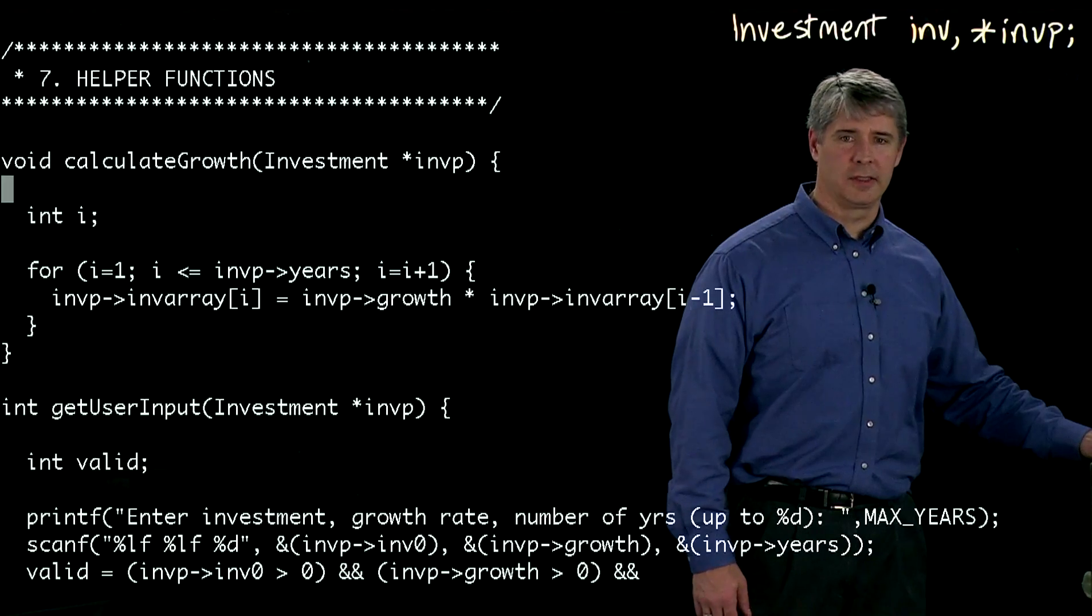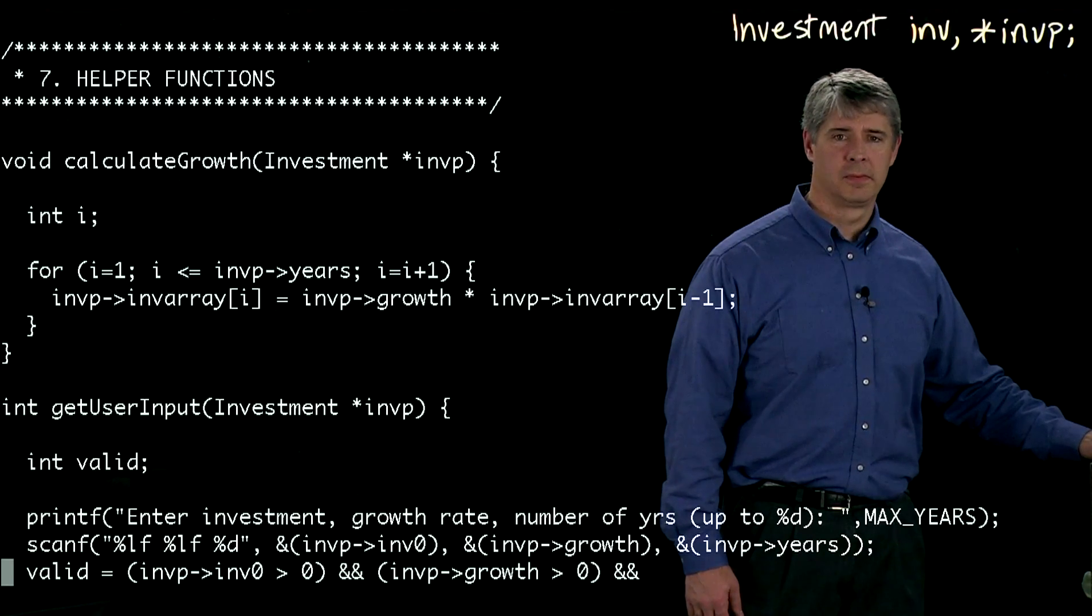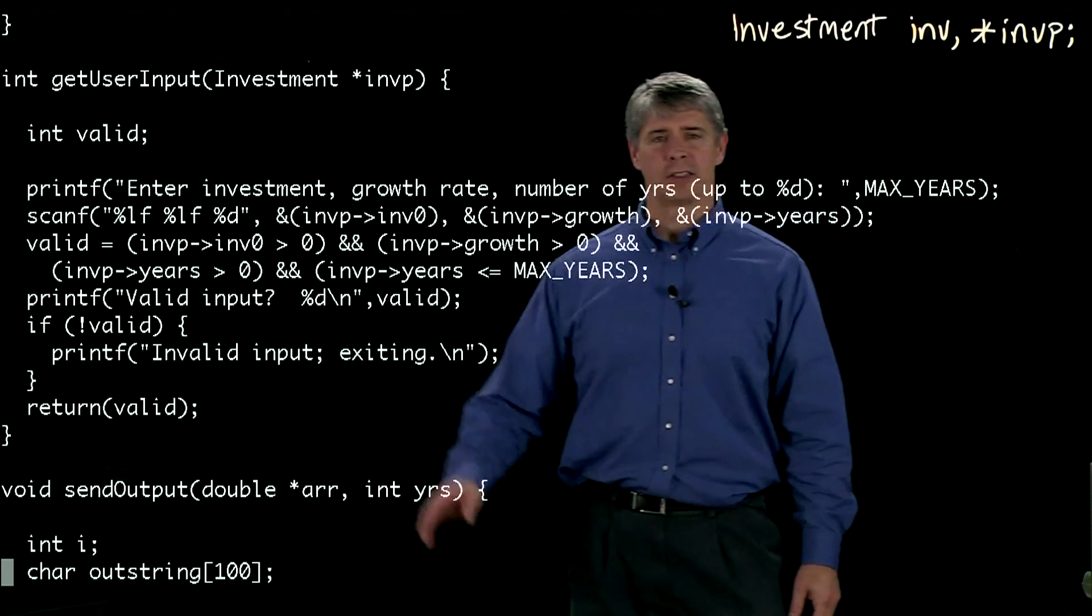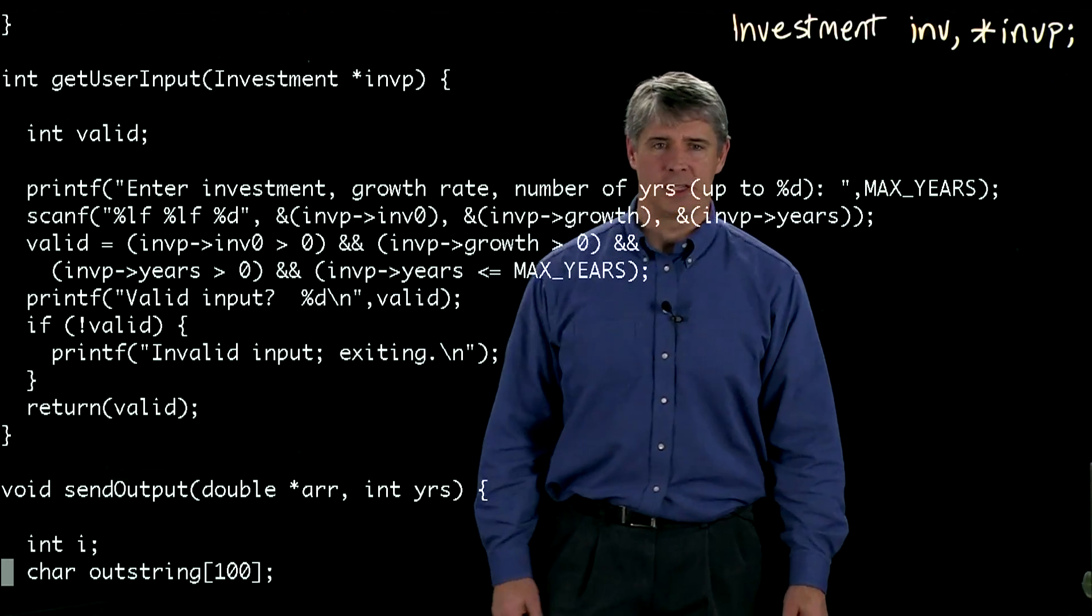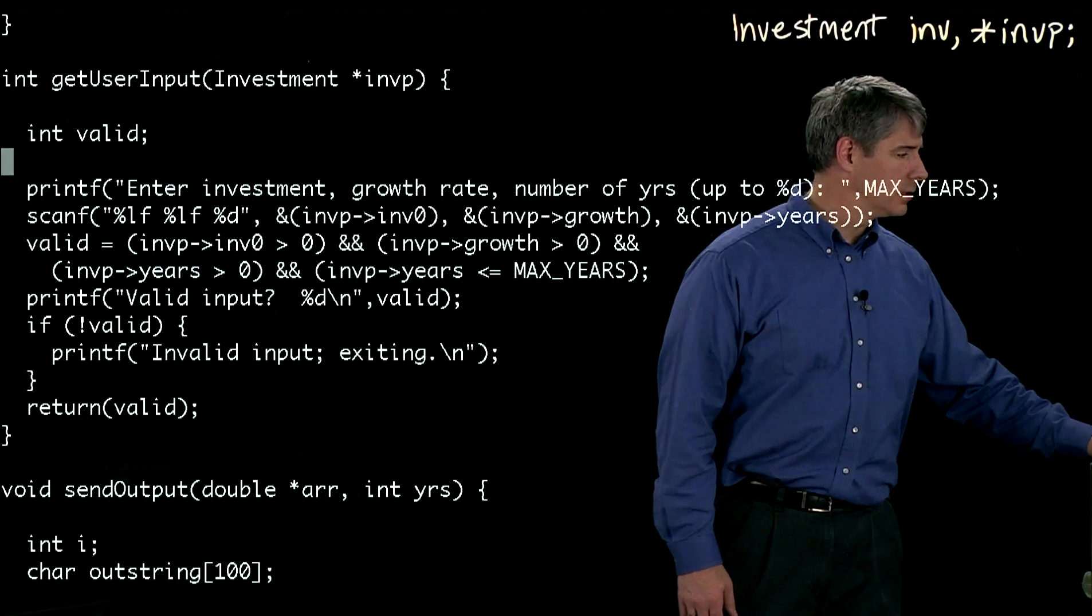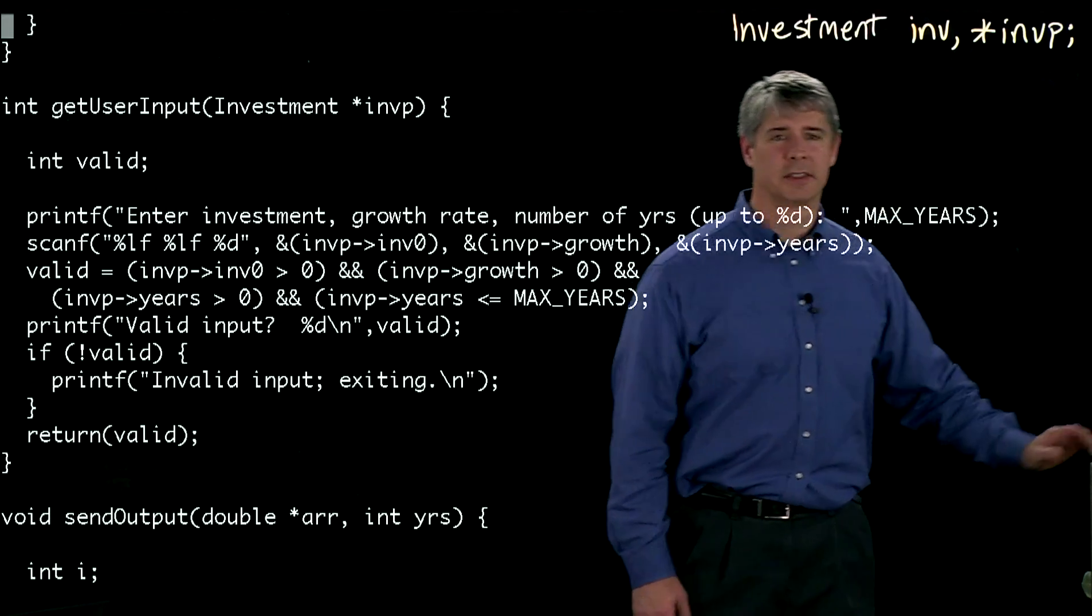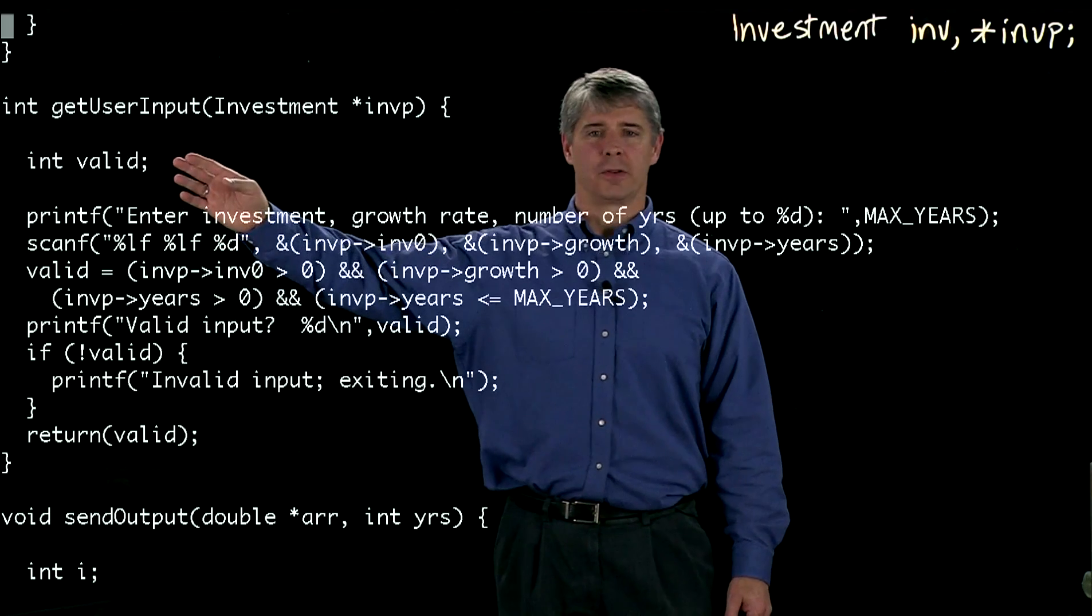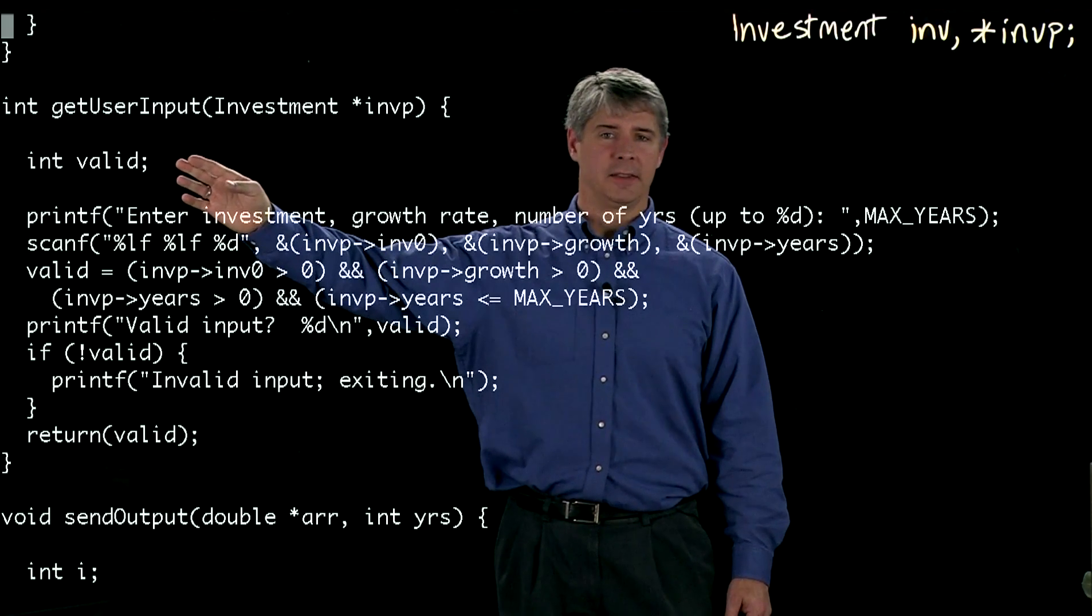So if we continue down to get user input, it also takes a pointer to something of type inv. And it also defines a local variable, an integer called valid.